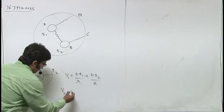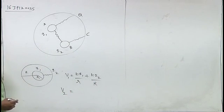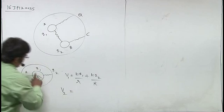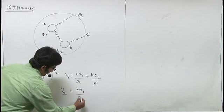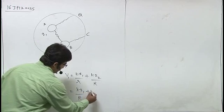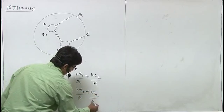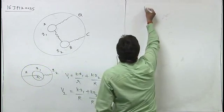Similarly, the potential of the outer sphere will be V2 equals k·q1/R plus k·q2/R. Now V1 equals V2.